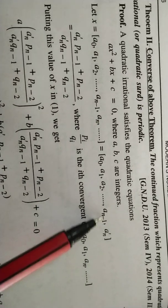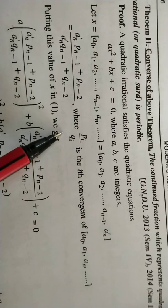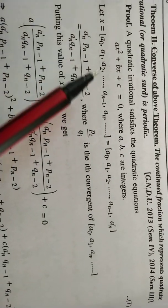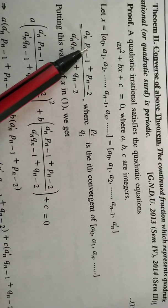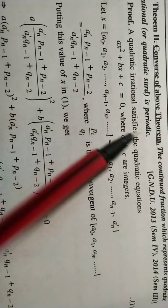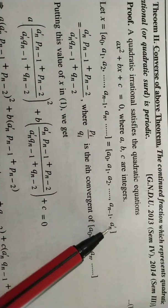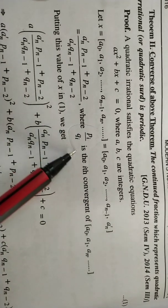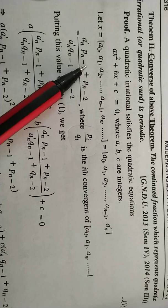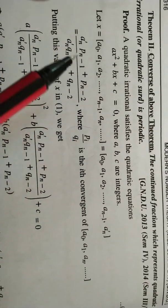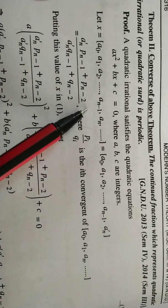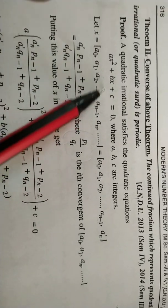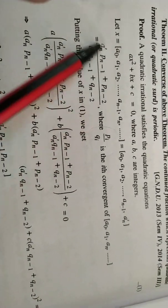In the key step, a_n' is expressed using the convergent relation: a_n' equals (a_n'·p_{n-1} + p_{n-2}) / (a_n'·q_{n-1} + q_{n-2}), where p_i / q_i (or h_i / k_i) denotes the i-th convergent. This leads to a quadratic equation for a_n'.